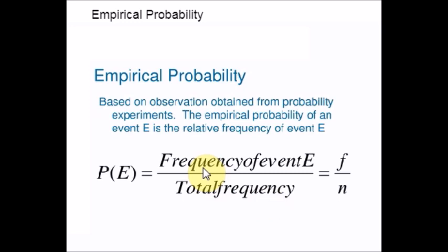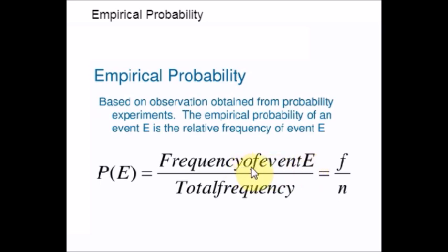We generally denote Frequency by F and the Total Number of Frequency by small n. The Frequency of an Event E is nothing but the Number of Times the Desired Event Occurs. Total Frequency is nothing but the Total Number of Trials or Tested Items. Hope you are clear with the definition.